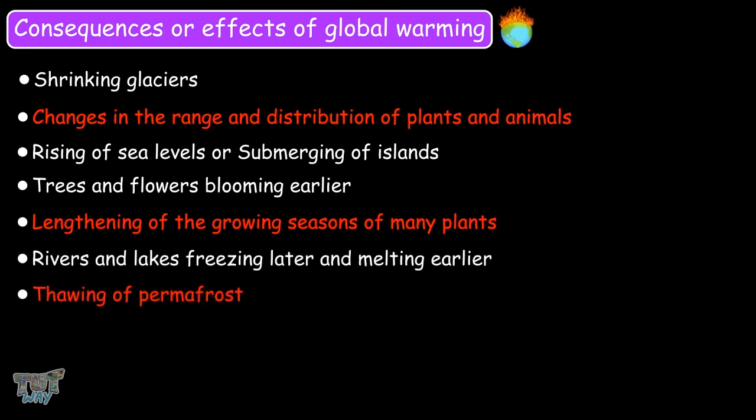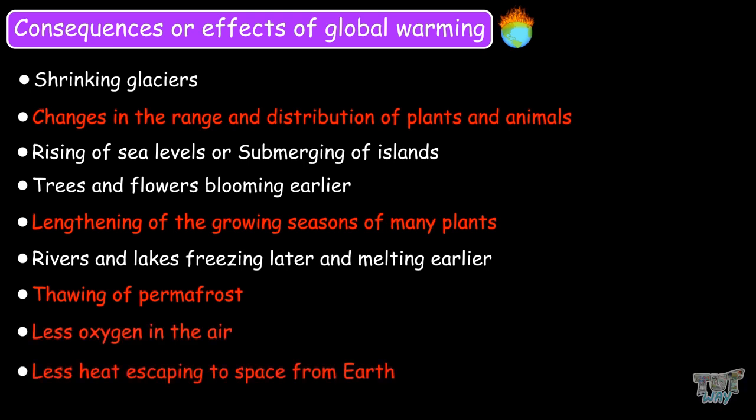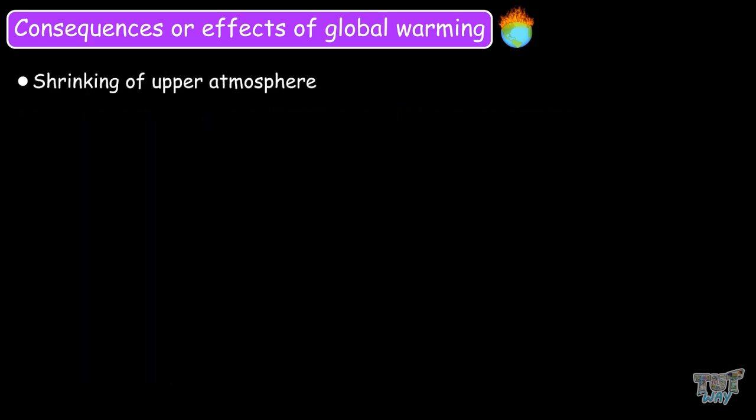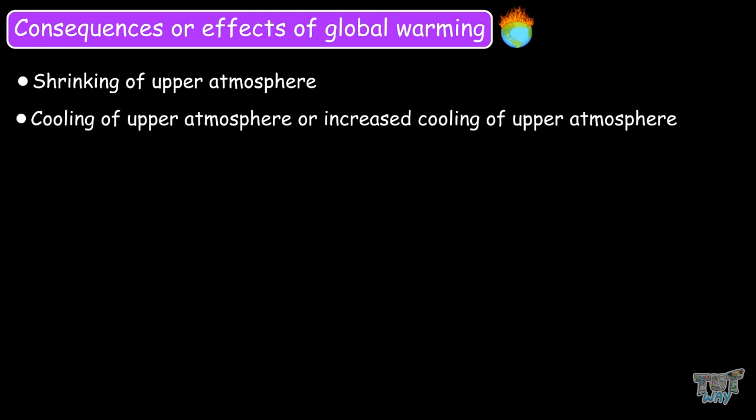rivers and lakes freezing later and melting earlier, thawing of the permafrost, less oxygen in the air, less heat escaping to space from earth, shrinking of the upper atmosphere, cooling of the upper atmosphere or increased cooling of the upper atmosphere, more heat returning to the earth, rising of the troposphere. So these are some of the consequences of global warming. We will learn about these consequences in detail in our next section.